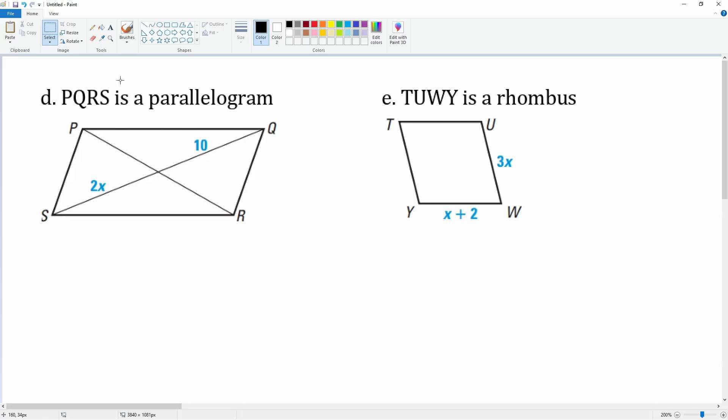All right, here we have question d. We know that PQRS is a parallelogram. What do we know about these? Well, these are the diagonals, and we know for a parallelogram the diagonals bisect. That means their parts are congruent. Therefore, we can say 2x is equal to 10, divided by 2, divided by 2.